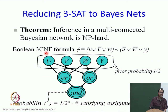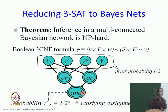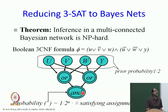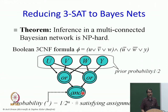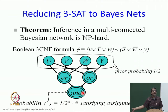Now I do Bayesian network inference. The inference I do is: what is the probability of the AND node? Think about what that gives you. If the probability of AND is 0, that tells me the formula is unsatisfiable — there is just no way to make the AND node 1. If the probability of AND is 1, that tells me all configurations make AND true.